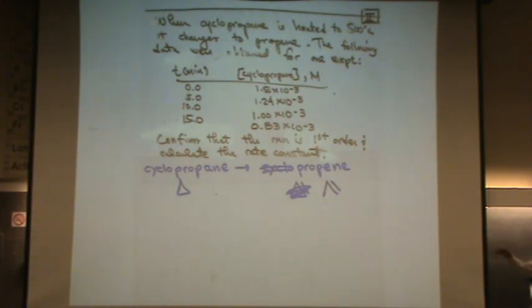Okay, so if you want to determine if it's first order, what you need to do is plot it such that you plot the natural log of the reactant versus time. If you plot the natural log versus time and you get a line, it's first order.